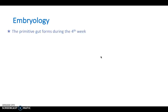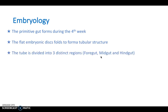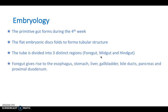Moving on to embryology — the primitive gut forms around the fourth week of development as flat embryonic discs fold to form a tubular structure, hence the gut tube. It's divided into three distinct regions: the foregut, midgut, and hindgut. The foregut gives rise to the esophagus, stomach, liver, gallbladder, bile ducts, pancreas, and proximal duodenum.